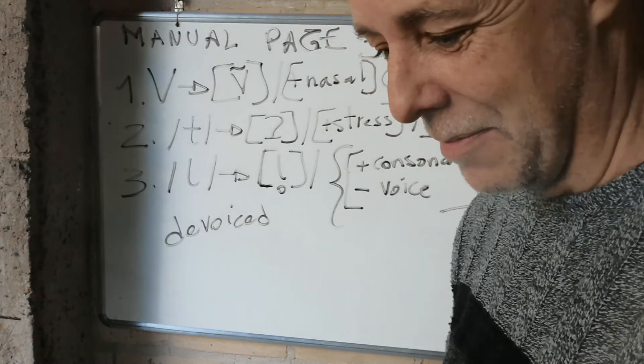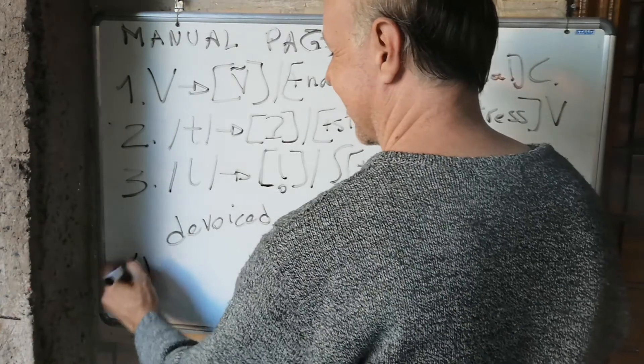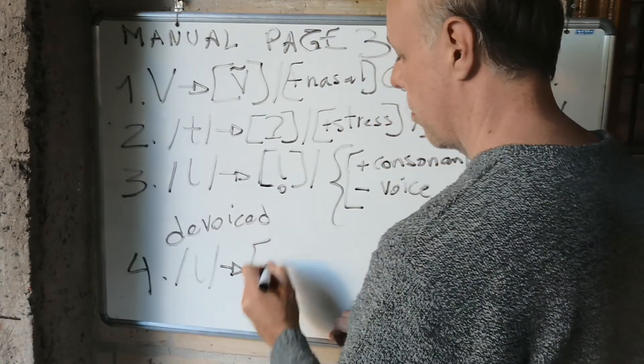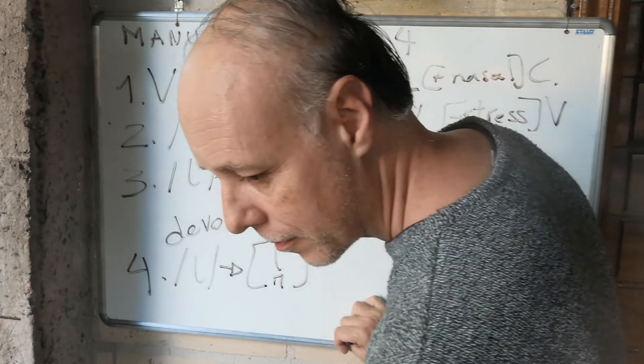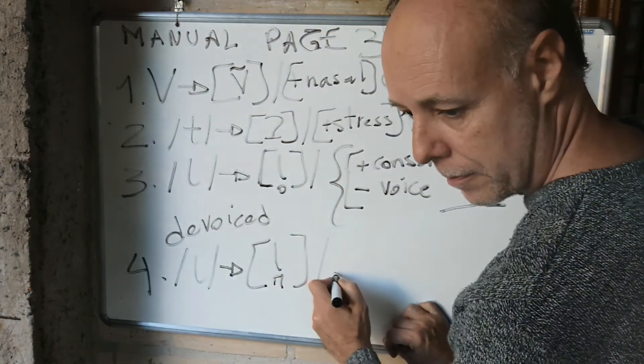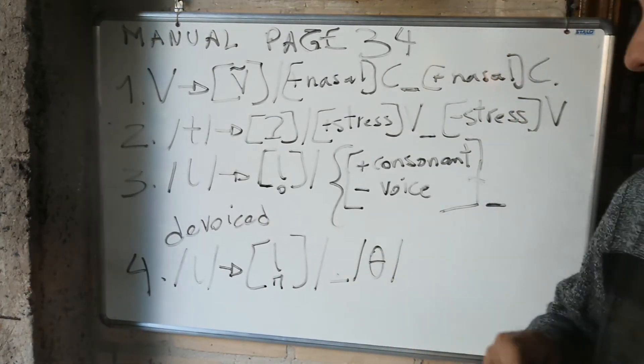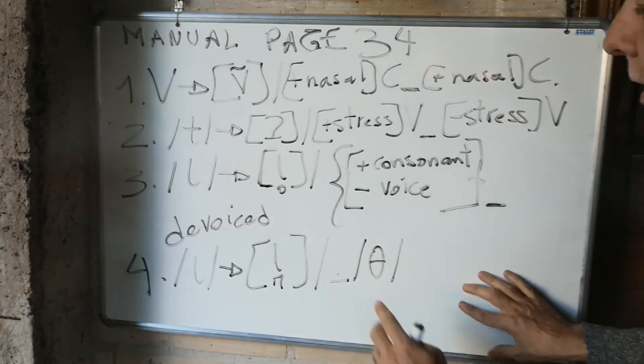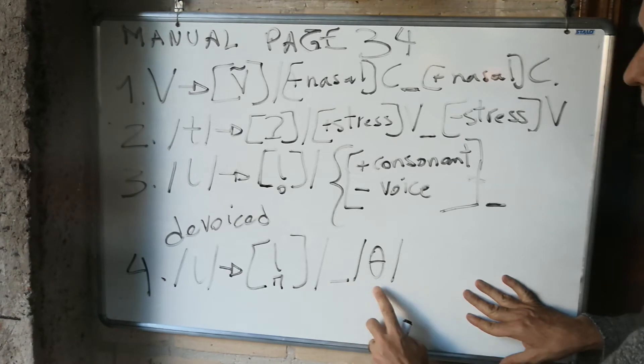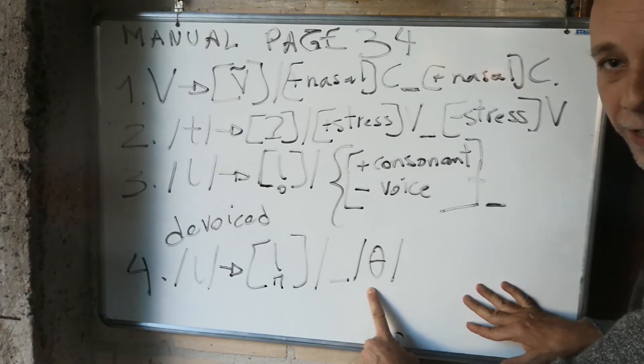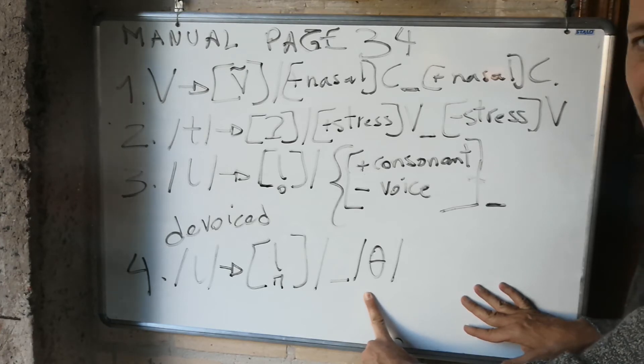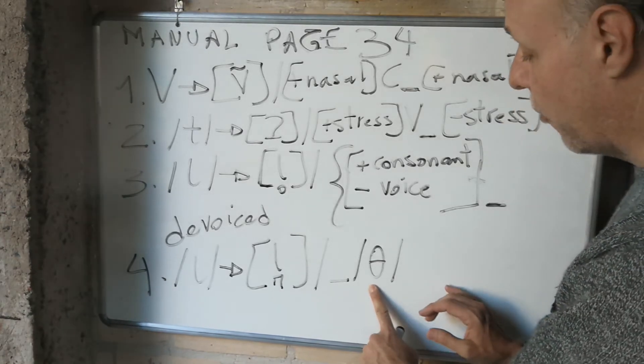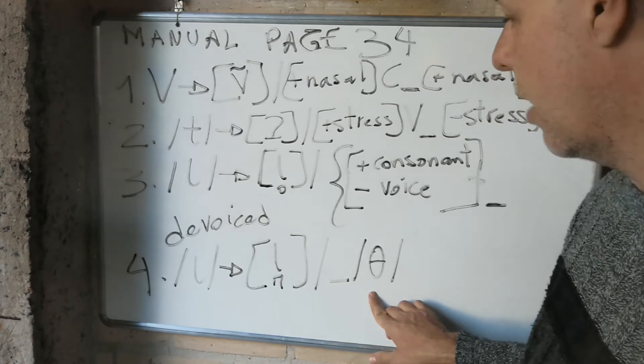Number four. Again, the sound L. The voiced alveolar liquid sound becomes dental. In what phonological environment? Before a voiceless interdental fricative sound. Before an interdental, a voiceless interdental fricative sound. That's how we read the rule.